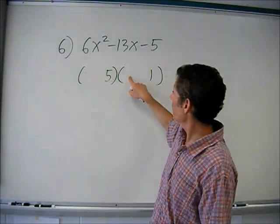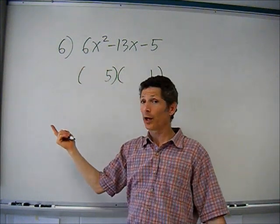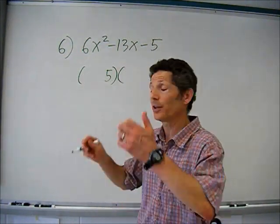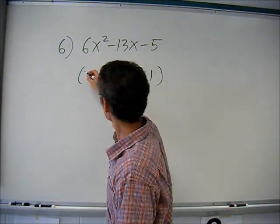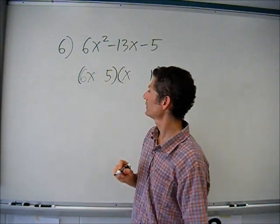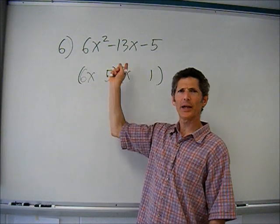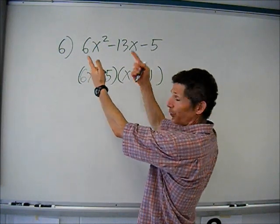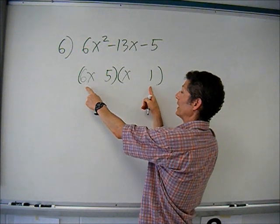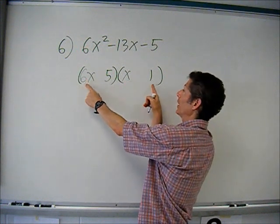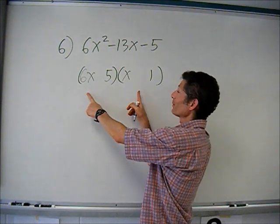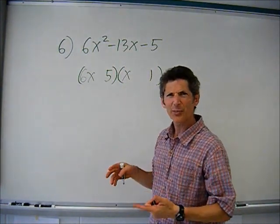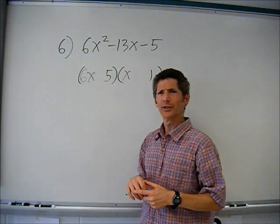These first terms — something times something must give me 6x². I don't know if it's 6 and 1, or 2 and 3, or 3 and 2. I'm going to try something: let's try 6x and 1x. When I multiply this out, the first term works, the last term works. The middle term comes from the outers and inners: 6x times 1 is 6x, and the inners are 5x. Is there any way to get 13 from a 6 and a 5 by adding or subtracting? No, I don't think so.